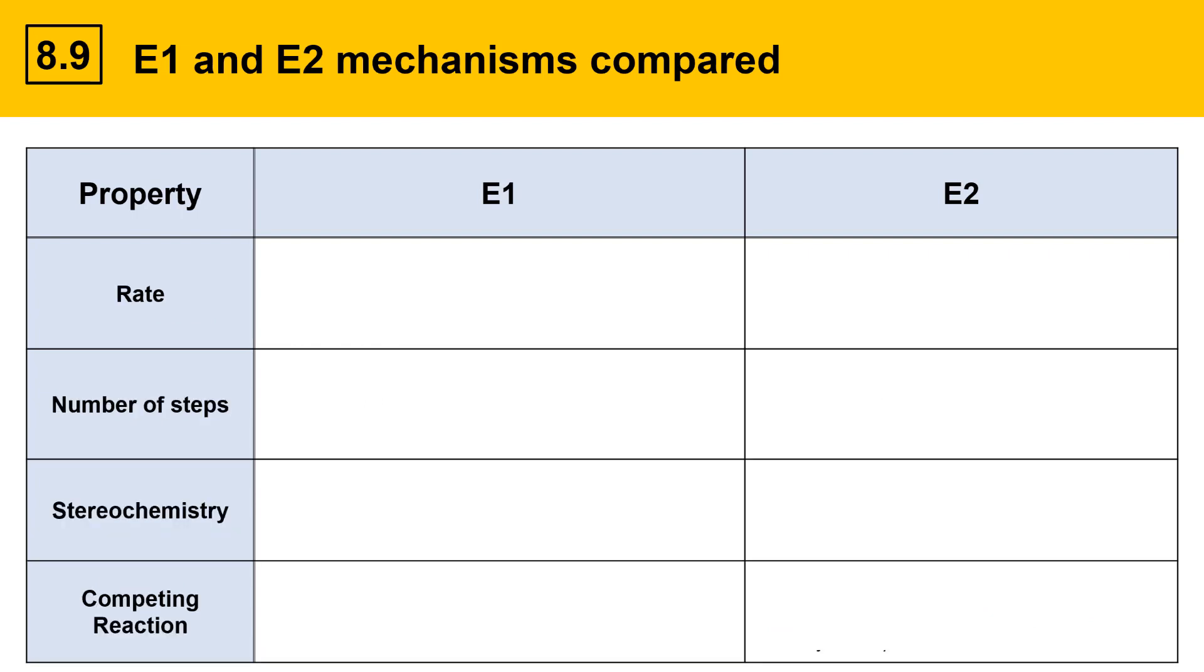This next slide compares some additional properties of the two mechanisms. First, let's take a look at the rate. The rate law for E1 just depends on the concentration of the alkyl halide substrate. That's because it's the only species involved in the rate-determining step. E2, however, being bimolecular, depends on the concentrations of two things, the alkyl halide RX and the base.